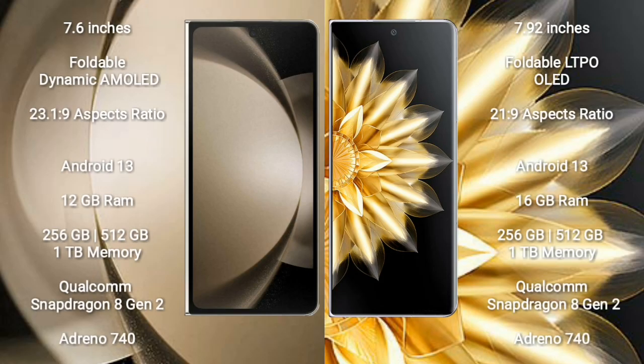Samsung Galaxy Z Fold 5 comes with a 7.6-inch foldable dynamic AMOLED display. Honor Magic V2 comes with a 7.92-inch foldable LTPO OLED Plus display. Both Samsung Galaxy Z Fold 5 and Honor Magic V2 run on the Android 13 operating system.